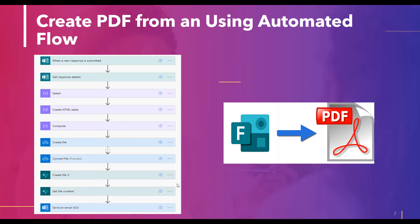After creating the file in OneDrive, it will convert the file to the target type — that is PDF format. Then it will get the file content, and if you want to send it to another user, the last step will send it via email.